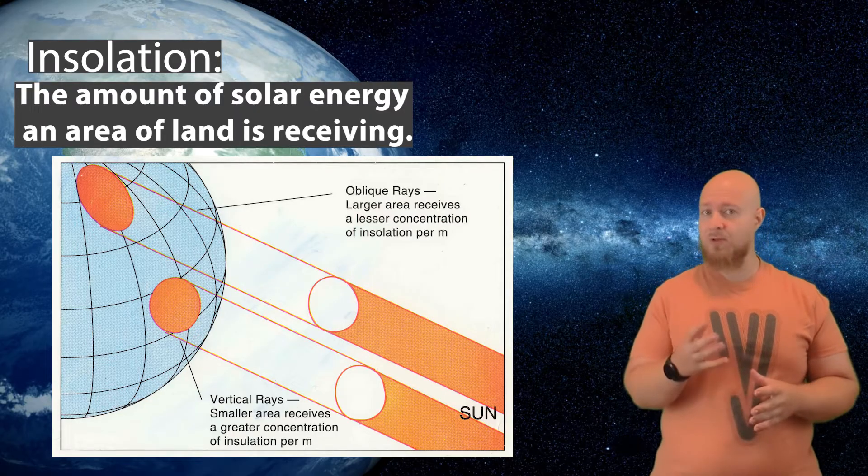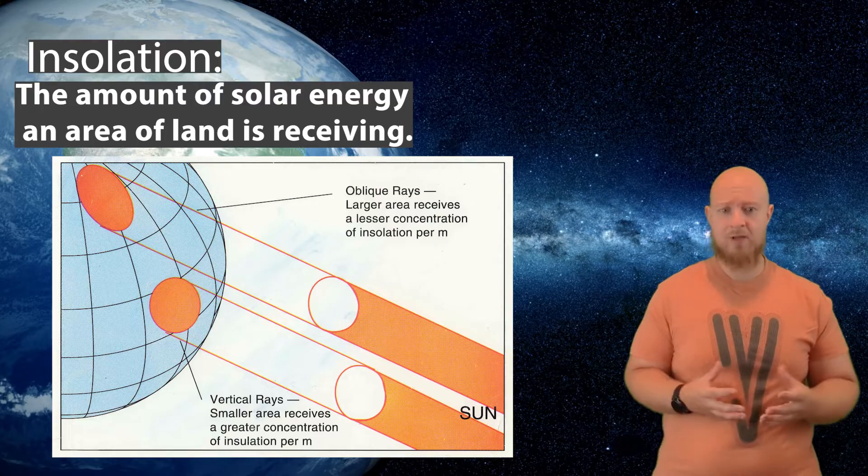Solar radiation is the single most important factor that impacts the formation of global wind patterns. Insulation refers to the amount of solar energy an area of land is receiving.